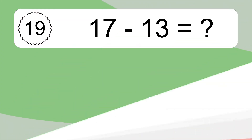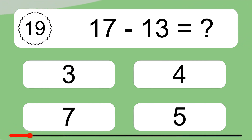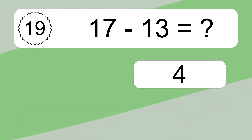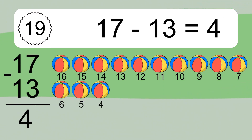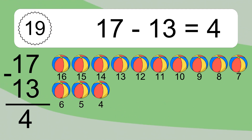17 minus 13 equals what? 17 minus 13 equals 4. Let's count it: 16, 15, 14, 13, 12, 11, 10, 9, 8, 7, 6, 5, 4.